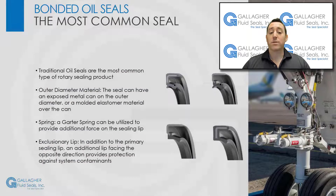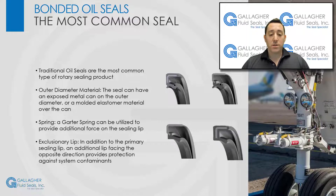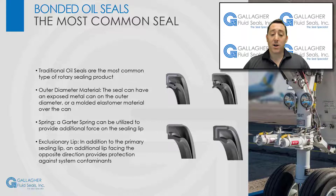So let's start with bonded oil seals. Traditional oil seals are the most common type of rotary sealing product. This product has some key features that can be utilized depending on the performance needed. In our next video we will discuss materials, but we will touch base briefly here. The oil seal can have an outer diameter material composed of an exposed metal or molded elastomer over the can. Examples of both are on the right. On bonded oil seals, a garter spring can be utilized to provide additional force on the sealing lip, allowing it to seal at slightly higher pressures.